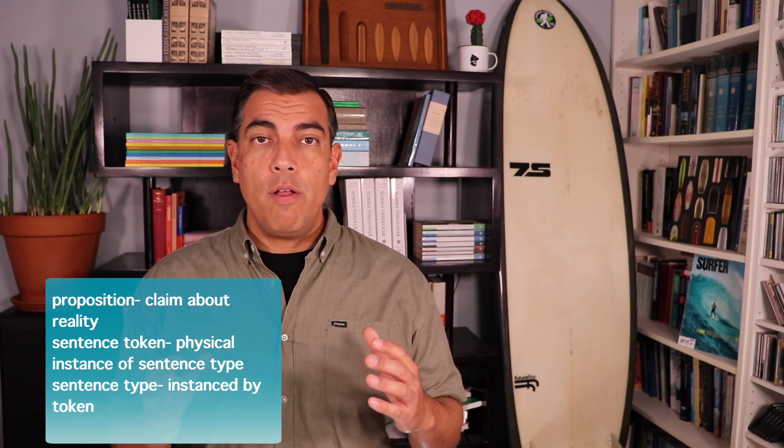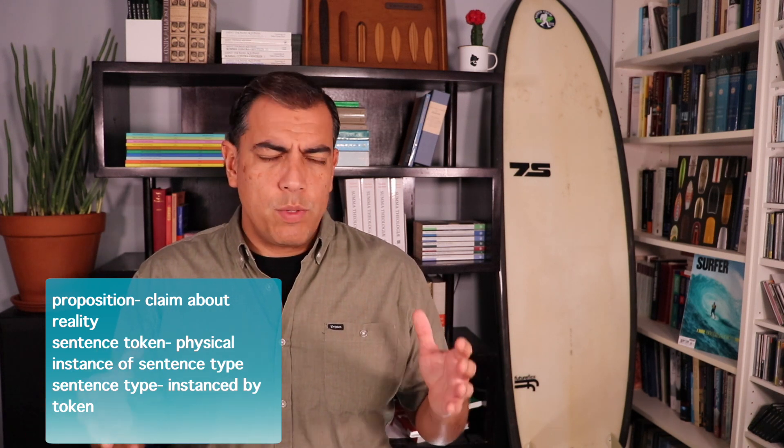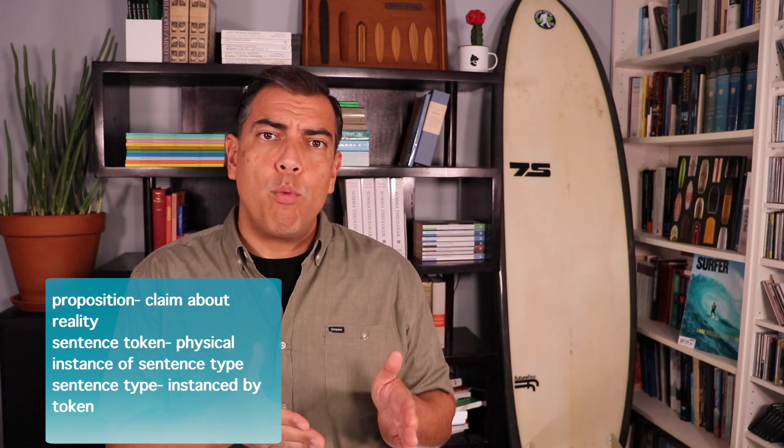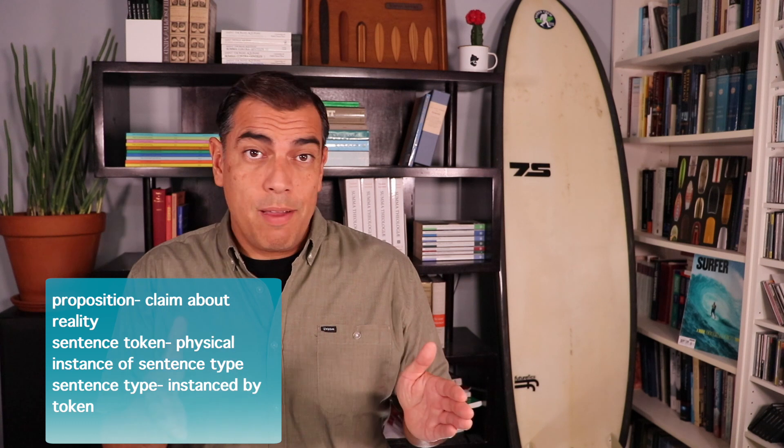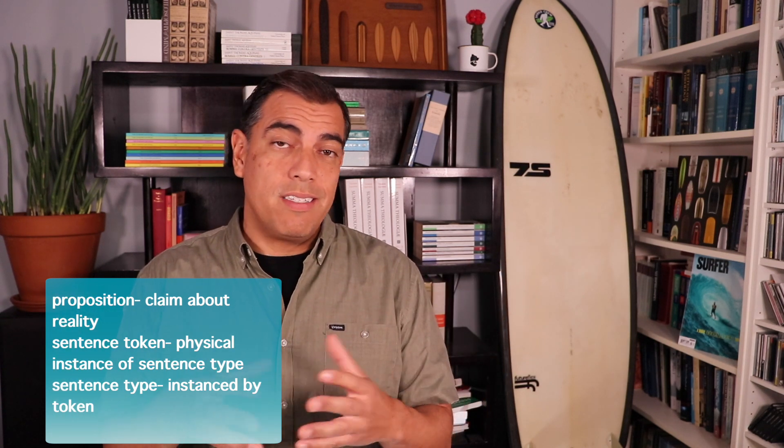Sentence types are what different sentence tokens with the same exact word type in the same exact order have in common. Even though they're physically different sentence tokens, they can be the same kind of sentence - they can be the same sentence type.